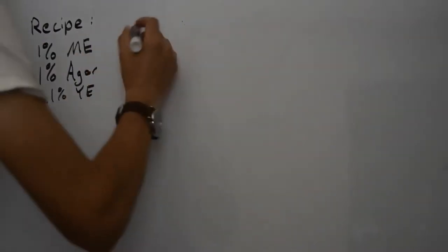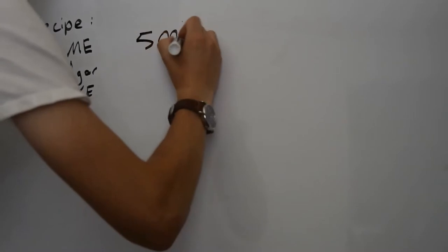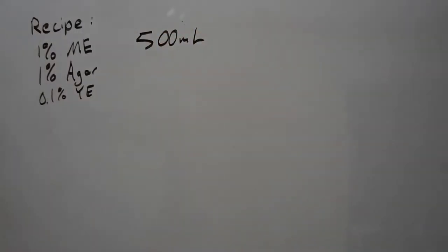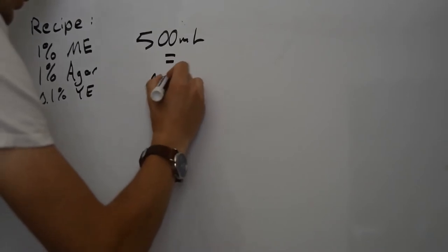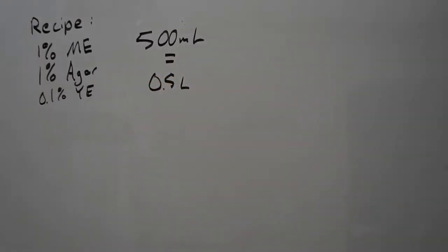These percentages are expressed as weight per volume. So for 500 milliliters or 0.5 liters volume, we will need to calculate how much of each ingredient we need.